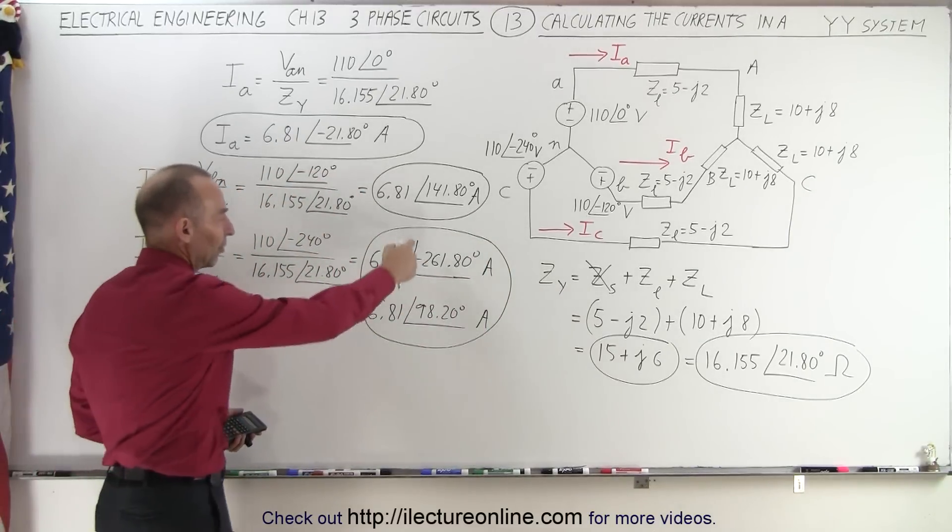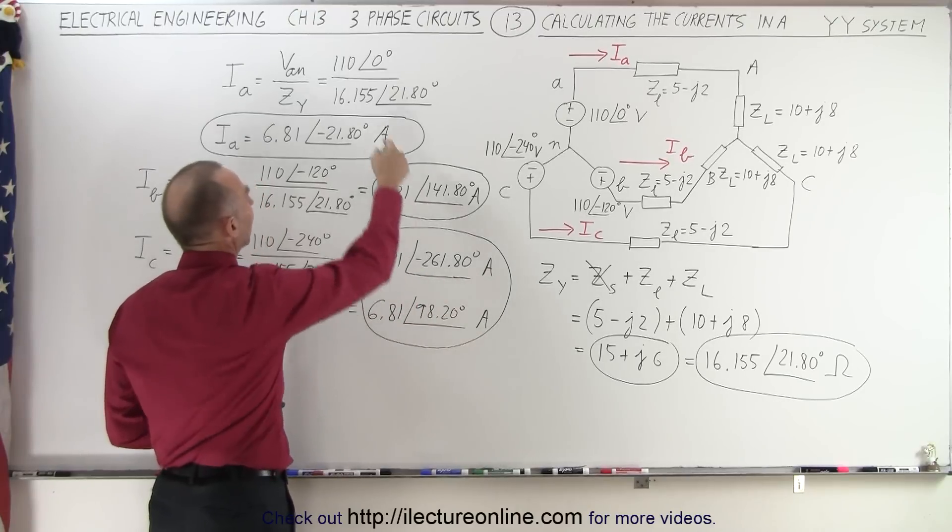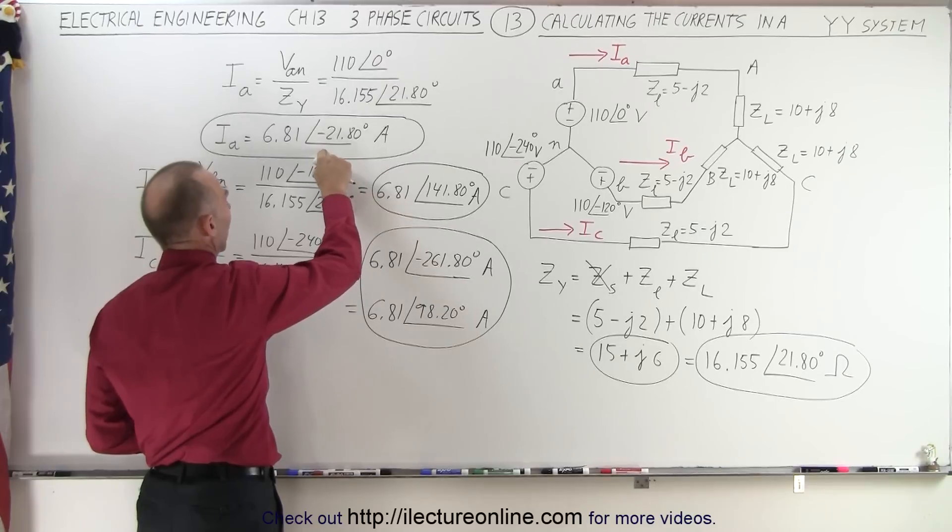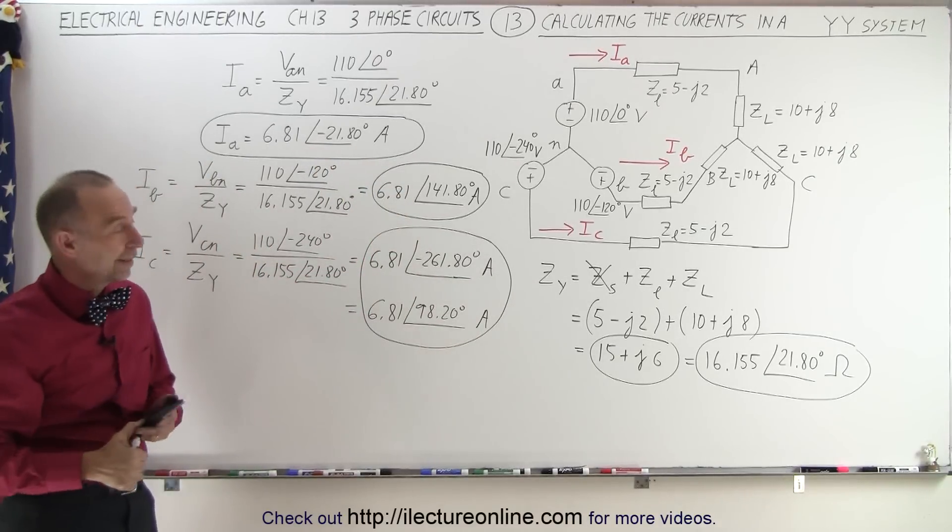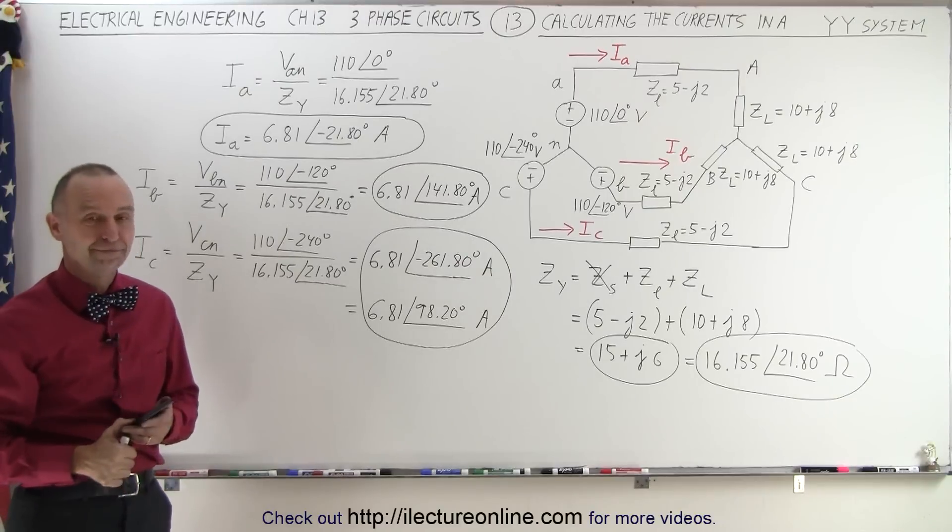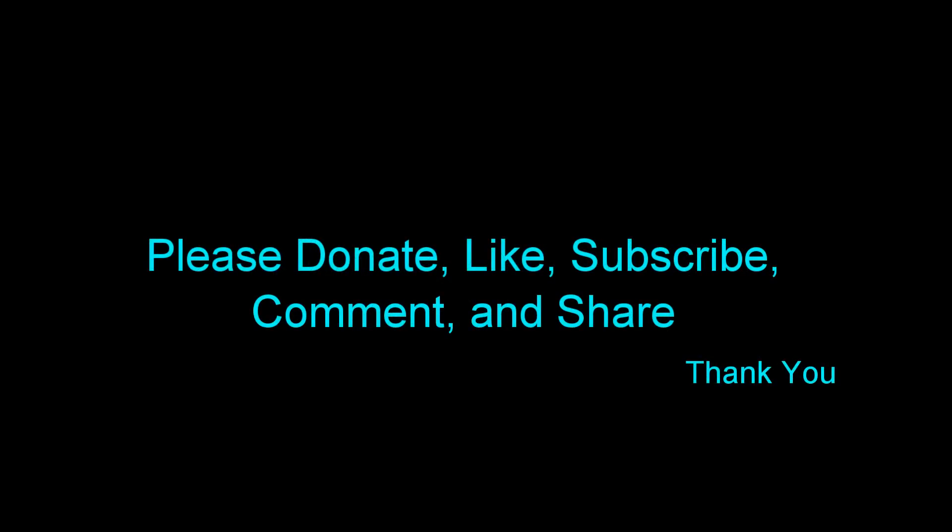So you can express this one in either format. And so therefore, we have the three currents for Ia, Ib, and Ic. And that is how it's done.